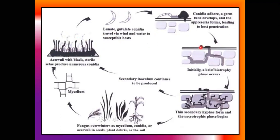The conidia germinate under favorable conditions and penetrate the healthy leaf of sorghum plants. The healthy host tissue becomes infected as the pathogen penetrates within it. In this way, initial infection is generally seen on the lower side of the leaf of sorghum plants. This completes the life cycle of Colletotrichum graminicola.